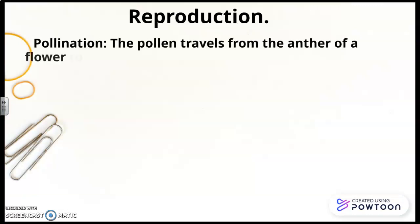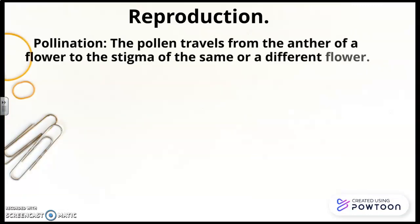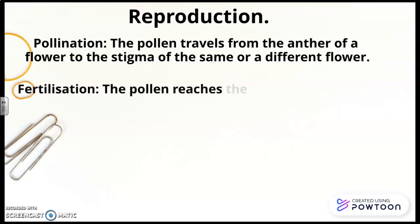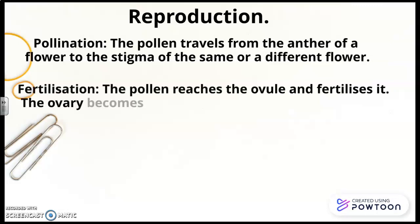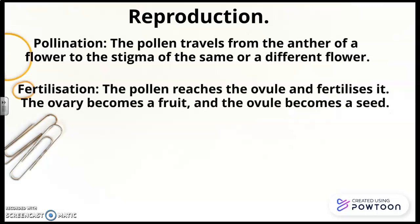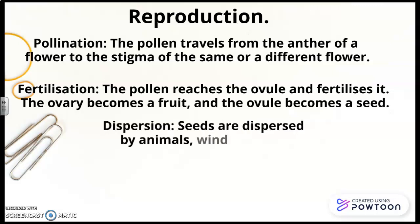Pollination. The pollen travels from the anther of a flower to the stigma of a different flower. Fertilization. The pollen reaches the ovule and fertilizes it. The ovary becomes a fruit, and the ovule becomes a seed.